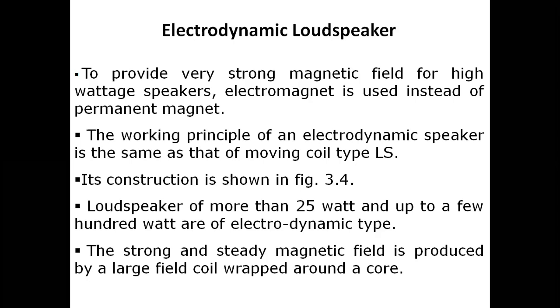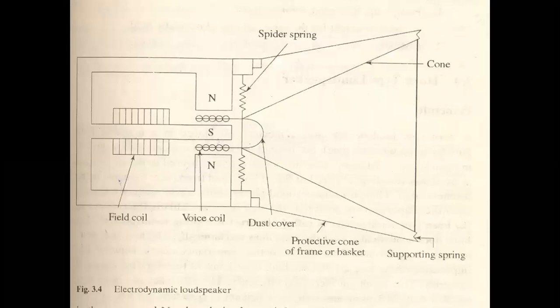Electromagnet यूज़ करने से हमें काफी strong magnetic field मिलता है, जो high wattage speakers के लिए ज़रूरी है। High strong magnetic field हमें electromagnet से मिलता है, न कि permanent magnet से — that's why for high wattage speakers हम electrodynamic speakers यूज़ करते हैं। Electrodynamic speaker 25 watt से लेकर few hundred watts तक यूज़ होते हैं। इसका construction cone type loudspeaker से काफी similar है। Structure में center पर एक pot type magnet है जिसका south pole center पर और north pole peripheral पर है, और field coils generate हो रही हैं।